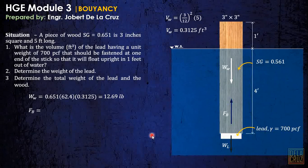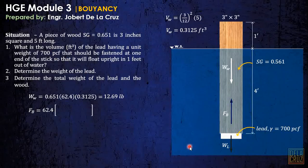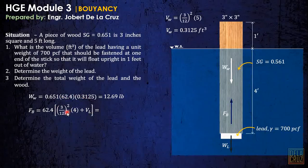Next, the buoyant force. Take note that what is submerged here is the 4-foot portion of the wood plus the volume of the lid. So the buoyant force is gamma of water times the volume submerged, which is the volume of the submerged wood portion plus the volume of the lid.